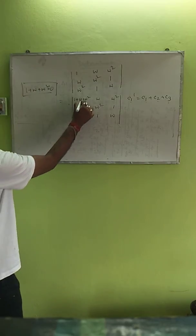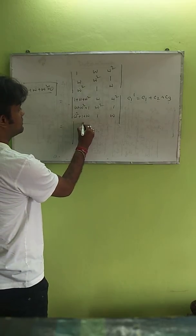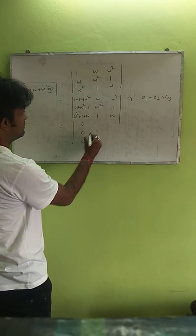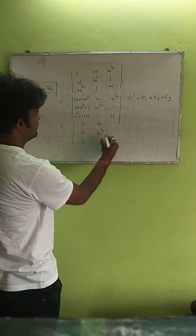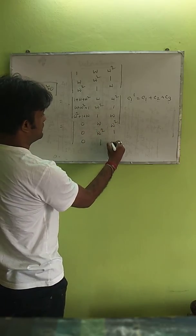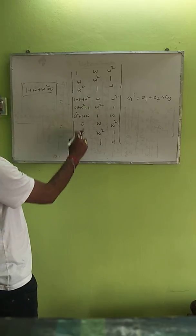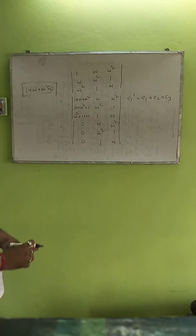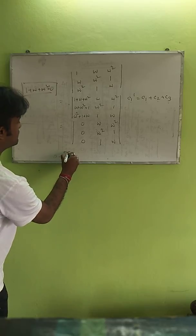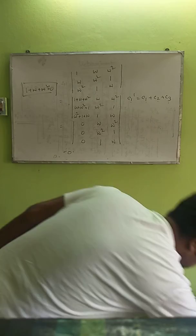So putting this value in the first column gives 0, 0, 0. The remaining columns are: ω, ω², 1 and ω², 1, ω. All three elements of the first column are 0, so the value of the determinant will be 0.